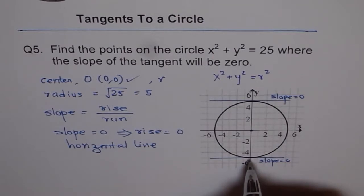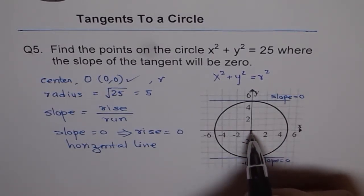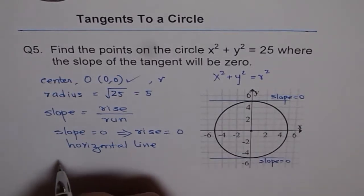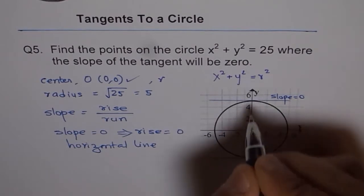And here also the slope is 0. What are the coordinates of these points? Let's find out that. The coordinates are x value is 0 and y value is 5. So the points are, let me call these points as A and B.